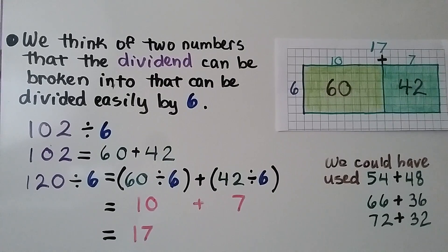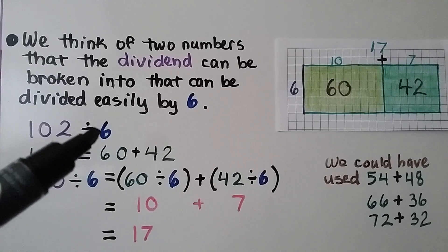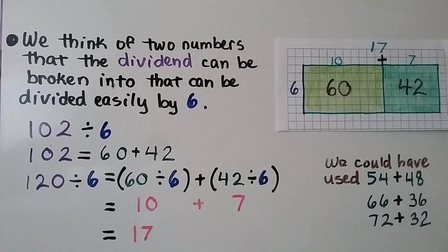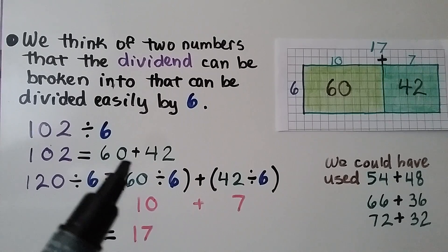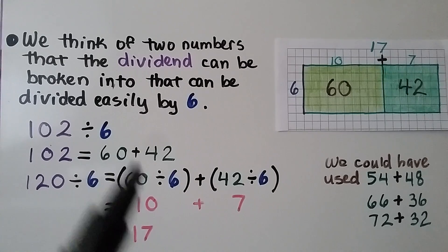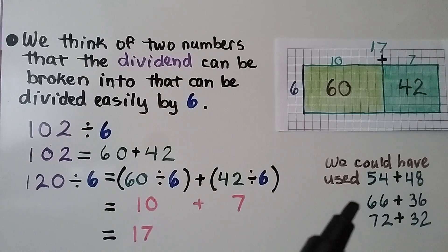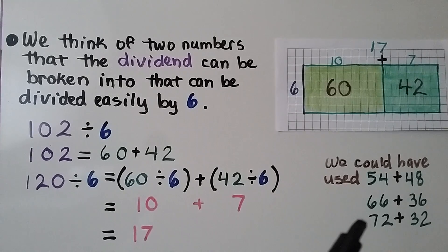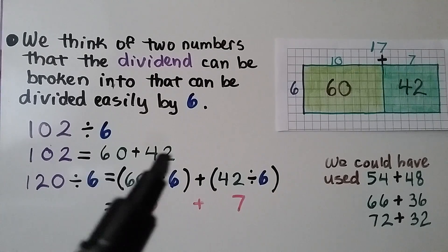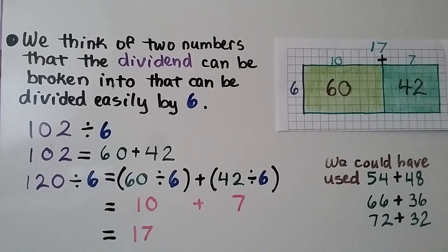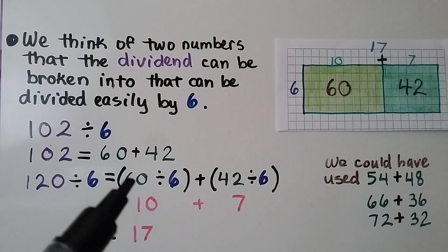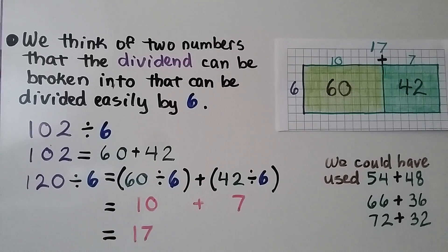We think of two numbers that the dividend can be broken into that can be divided easily by 6. We can use 60 plus 42. We also could have used 54 plus 48 or 66 plus 36 or 72 plus 32,